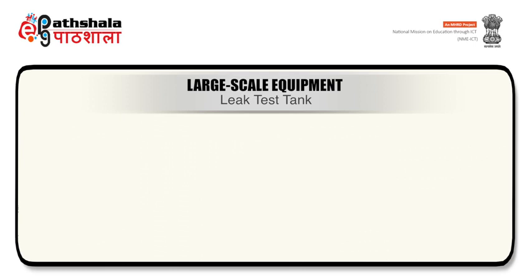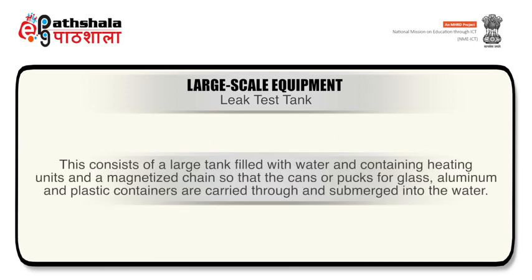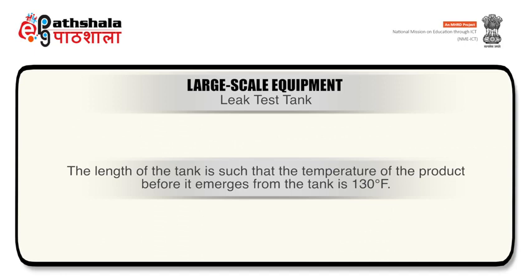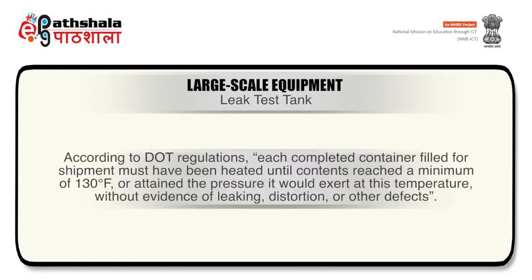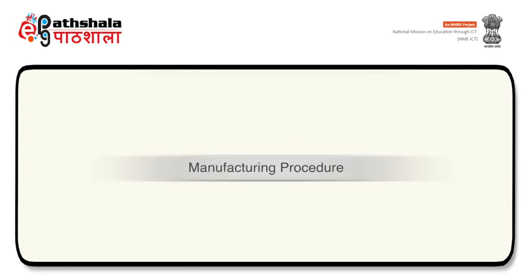The leak test tank comprises of a large tank filled with water containing heating units and a magnetized chain so that cans for glass, aluminum, and plastic containers are carried through and submerged into the water. The length of the tank is such that the temperature of the product before it comes out from the tank is 130 degrees Fahrenheit. According to DOT regulations, each completed container filled for shipment must have been heated until contents reach a minimum of 130 degrees Fahrenheit, or attain the pressure it would exert at this temperature, without evidence of leaking, distortion, or other defects.